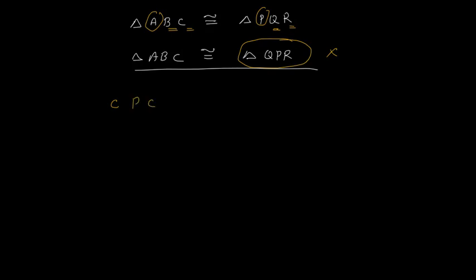CPCT stands for corresponding parts of congruent triangles. When two triangles are congruent, their corresponding parts are equal. So I check 3 corresponding parts — if those 3 corresponding parts are equal, then the rest 3 parts are going to be the same. That is the criteria for congruency of a triangle. Let us start with the first criteria, which is Axiom 7.1.